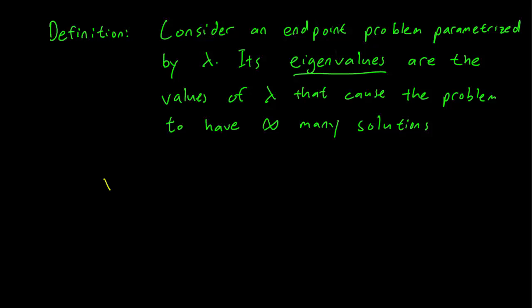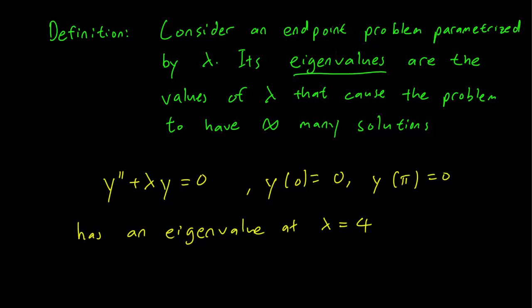To conclude the example that we just studied, the eigenvalue problem given by y'' + λy = 0, y(0) = 0, and y(π) = 0, has an eigenvalue at λ = 4. It doesn't have an eigenvalue at λ = 4.1. But λ = 4 will cause the problem to have infinitely many solutions. And that's why we refer to λ = 4 as an eigenvalue.